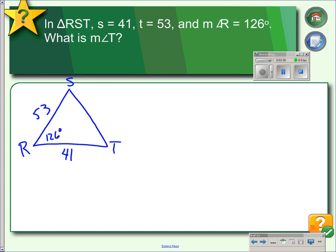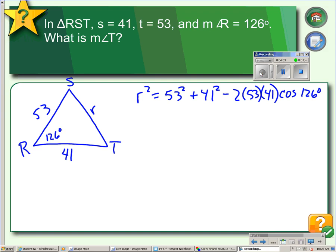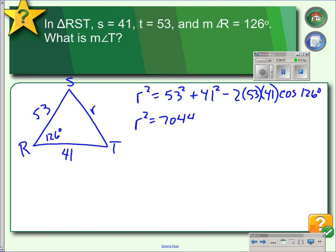We could use the Law of Sines if we knew angle T and its opposite side, or angle R and its opposite side. We don't, so we have to use the Law of Cosines to find side R first. R² equals the other two sides squared minus the other two sides times 2 times the cosine of R. We calculate this and get R² equals 7044.5, so R equals 83.9.